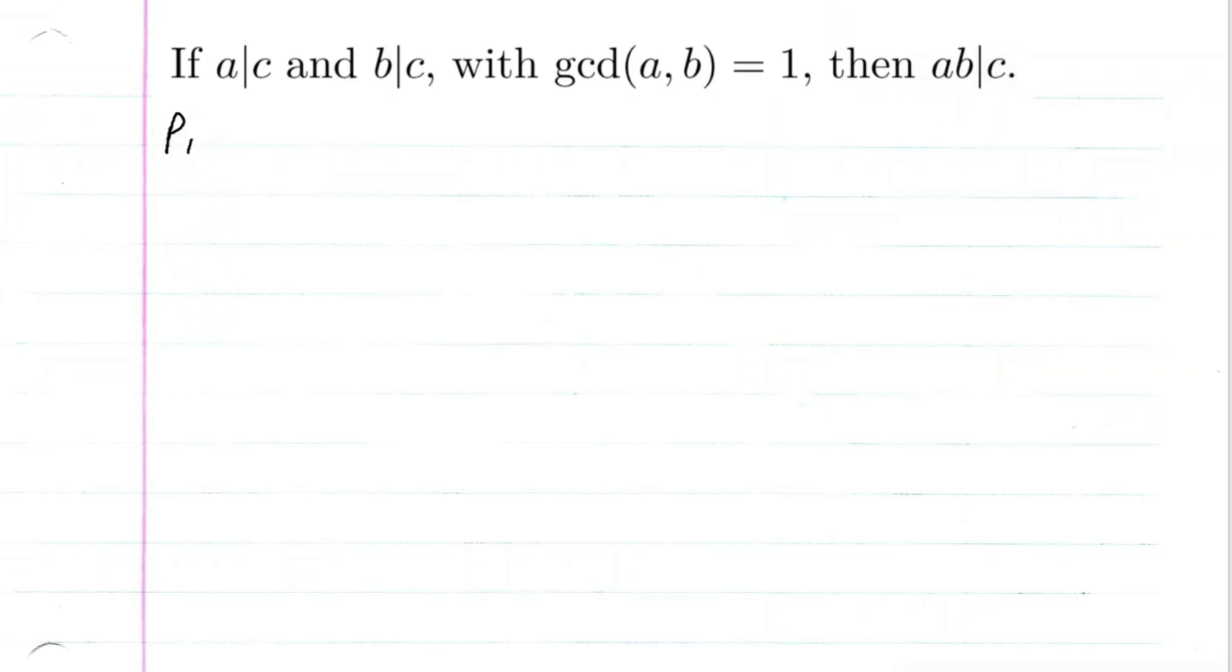So let's go ahead and start this proof. We're going to assume A divides C, B divides C, and the GCD of A and B is equal to one.